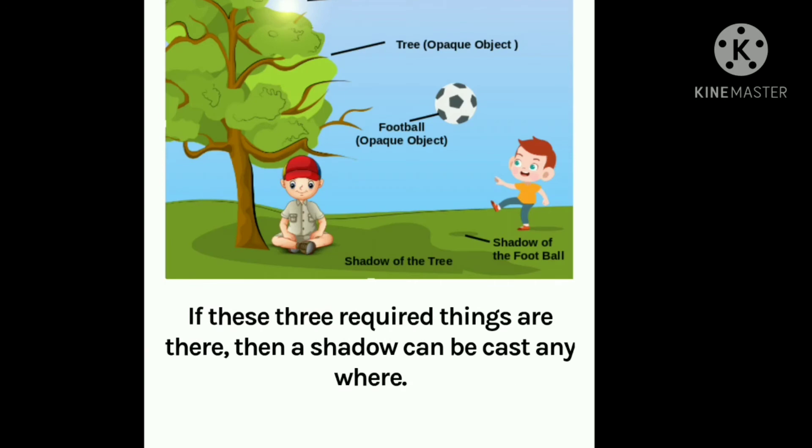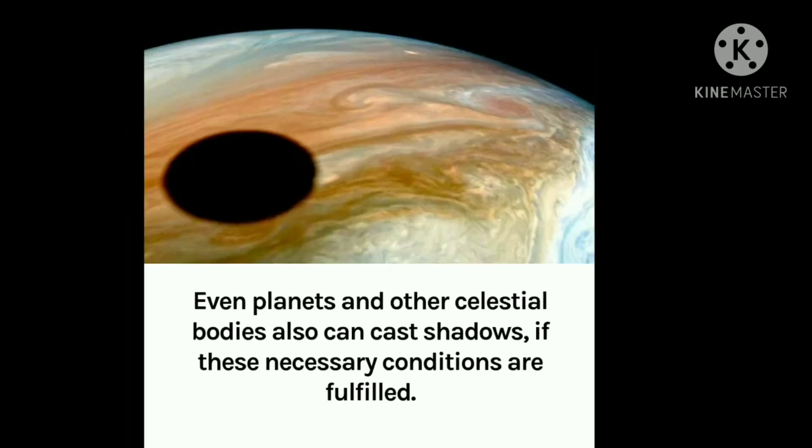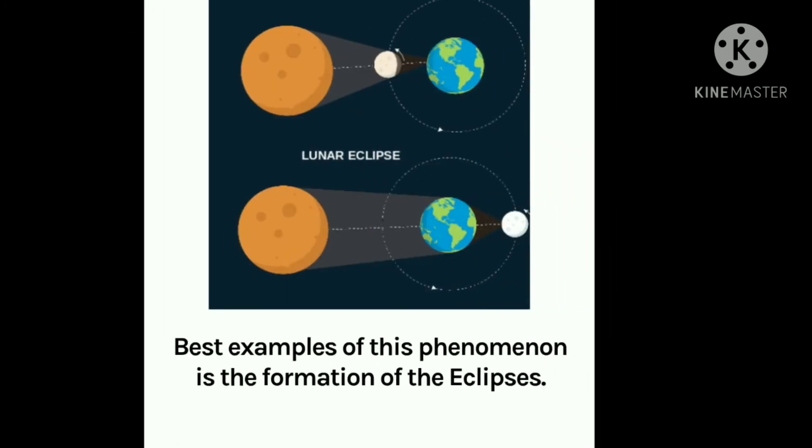If these three required things are there, then a shadow can be cast anywhere. The moon, planets and other celestial bodies also can cast shadows if these necessary conditions are fulfilled. Best example of this phenomenon is the formation of eclipses.